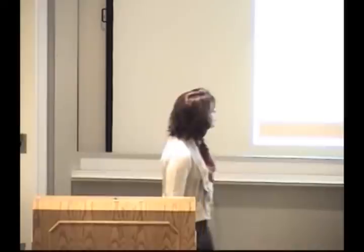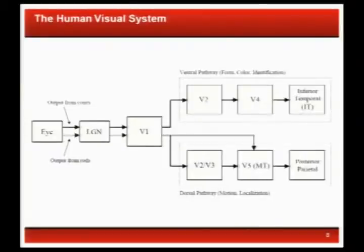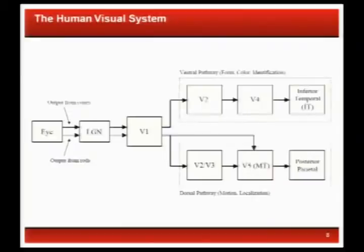Here's a model for the human visual system. We go in through the eye, pass through something called the lateral geniculate nucleus — which signal processing people who work with the brain completely ignore — and then we go into V1, the visual cortex. V1 is low-level vision and it can be well modeled by signal processing operations such as filtering. It also does things like edge detection and motion detection. We're primarily going to stick to V1.